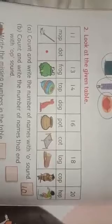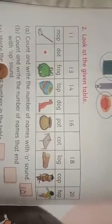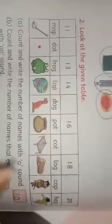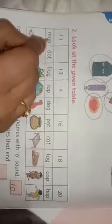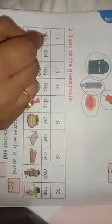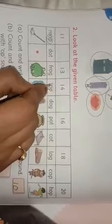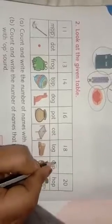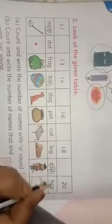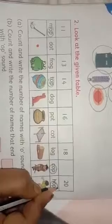Count and write the number of names that end with O-P sound. O-P sound word. Which is O-P? M-O-P, this is O-P word. Then T-O-P, this is O-P word. Then C-O-P cop, this is O-P word. And H-O-P hop, this is O-P word. How many words O-P?